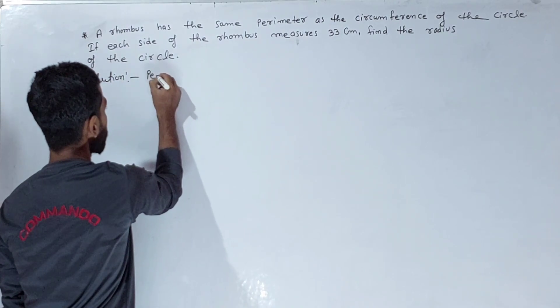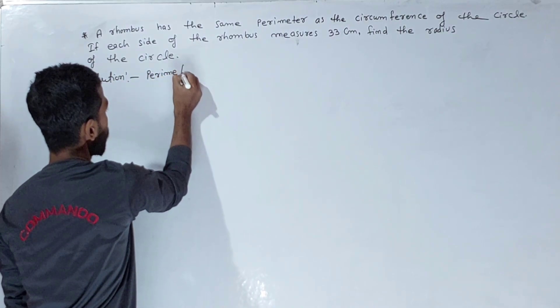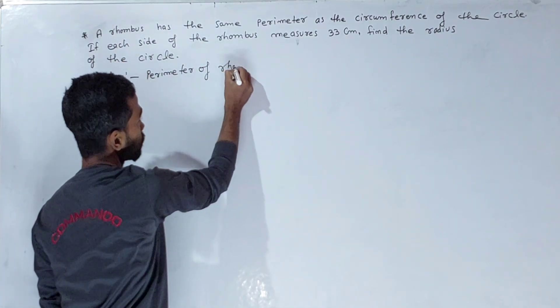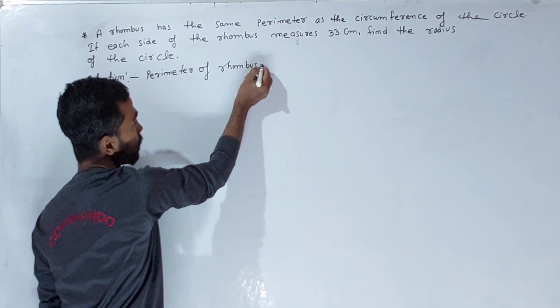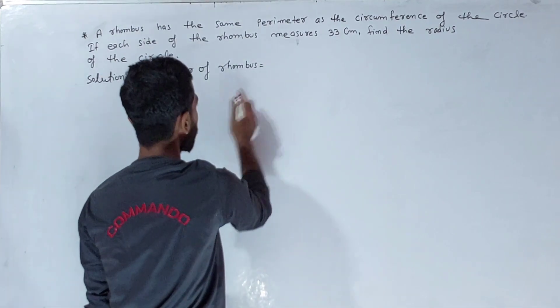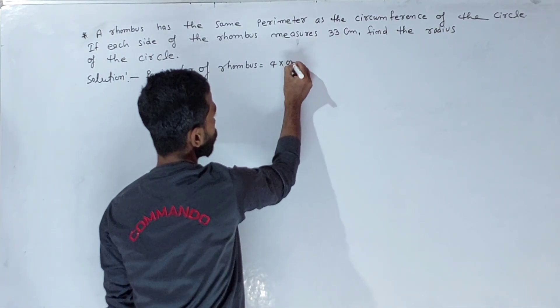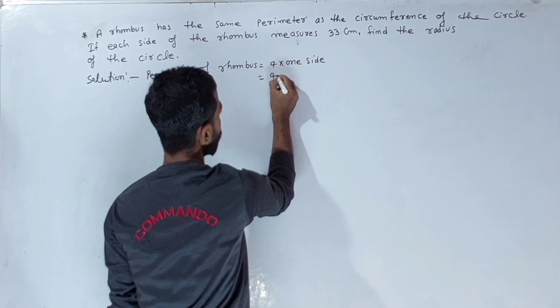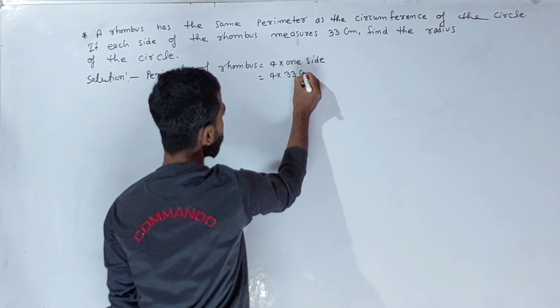First, we calculate the perimeter of the rhombus. The perimeter of a rhombus equals four times one side. So, 4 times one side equals 4 times 33 cm.